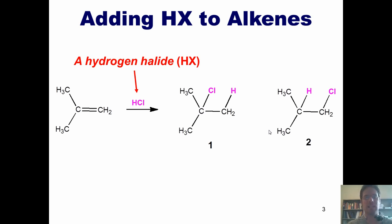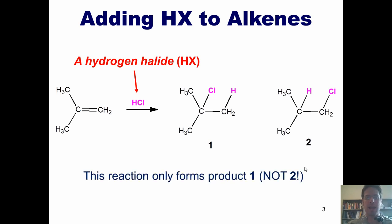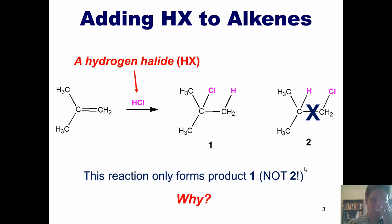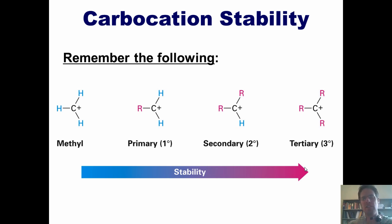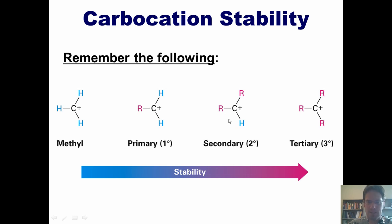Here's the interesting observation that has been experimentally determined: this reaction only forms product one and not product two, which should elicit the question — why? In order for you to understand the answer, you need to memorize one thing that is crucially important. Different carbocations are differently stable depending on how many carbons are bonded to them. Tertiary carbocations are more stable than secondary carbocations, which are more stable than primary carbocations, which are more stable than methyl carbocations.